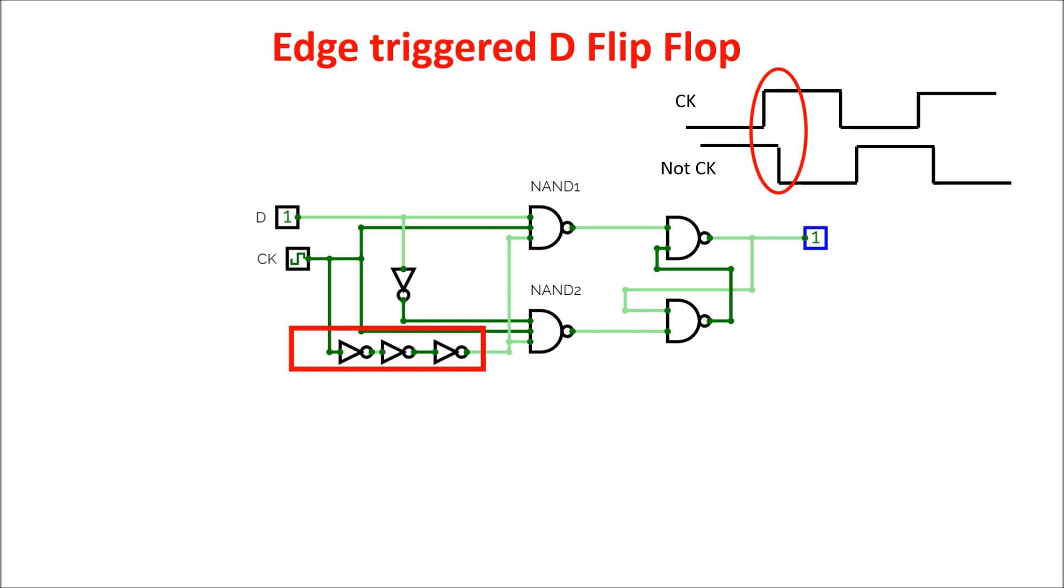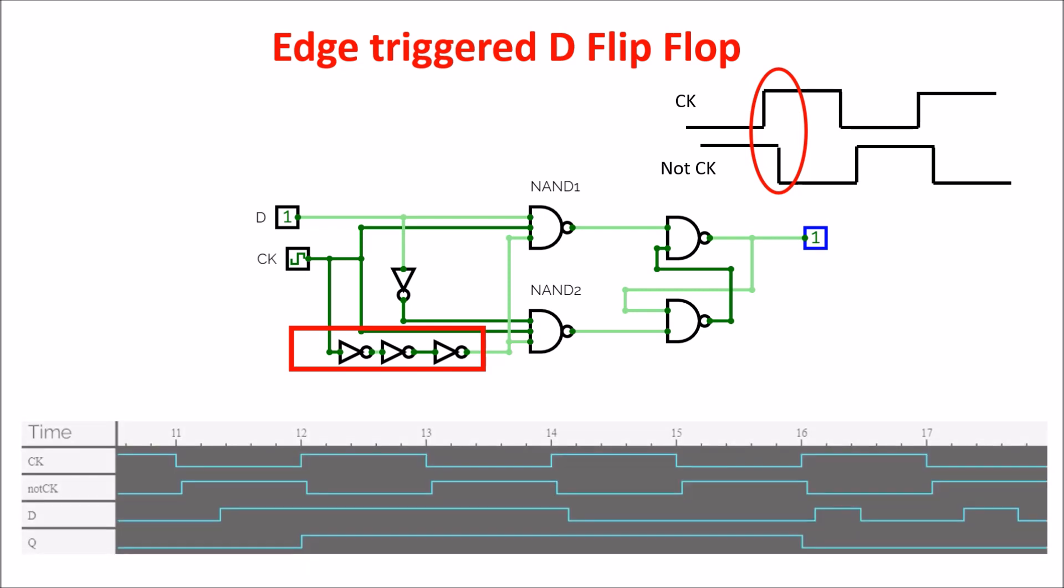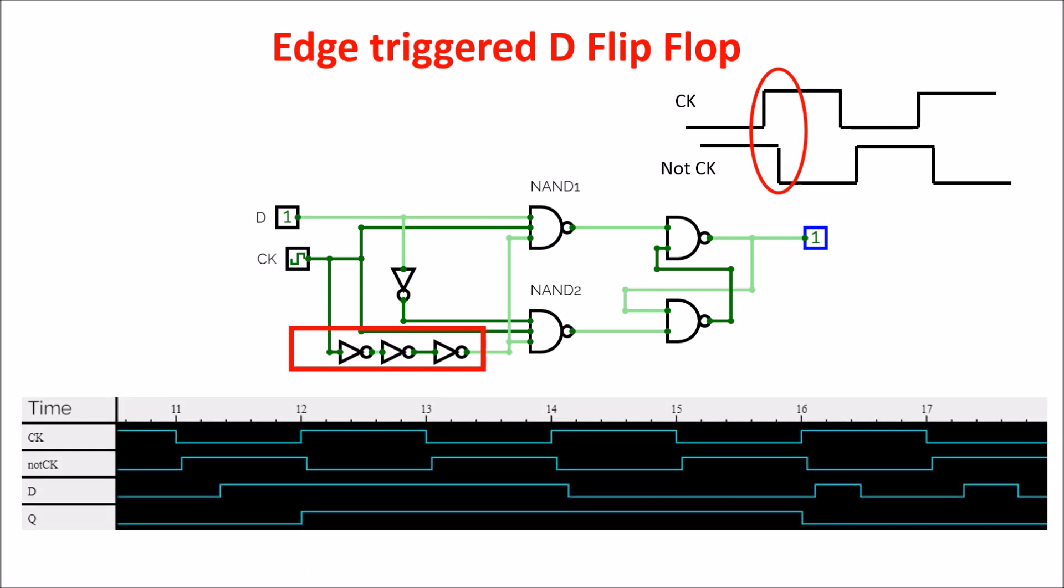So in this circuit the data D is read only on the rising edge of the clock, otherwise Q output is kept to the previous value. Here's a timing simulation where you can see the clock, the clock bar or NOT clock, the D input and the Q output. You can see on the rising edge of the clock, the clock bar is still high for a little longer and Q takes the value of D. So the input D is read only on the rising edge of the clock, and for the rest of the time Q remains in the previous state.